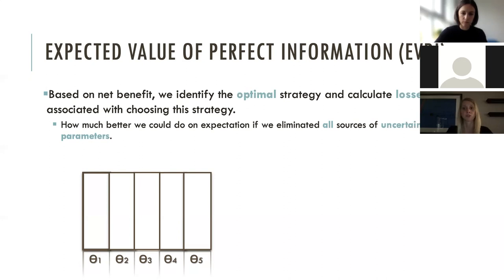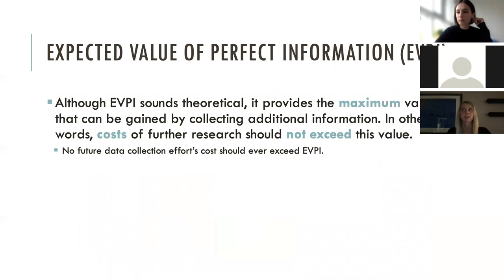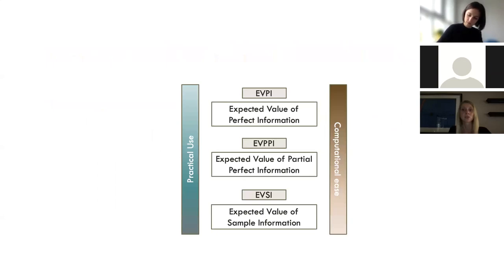At a willingness-to-pay threshold of $50,000 per additional life year gained, the EVPI would be $167,000 per patient. To estimate EVPI, we use net benefits to identify the optimal strategy, calculate losses associated with choosing that strategy, and ask how much better we could do on expectation if we eliminated all sources of uncertainty. Although EVPI is theoretical — perfect information is not feasible in practice — it provides the maximum value that can be gained by collecting additional information. No future data collection should ever cost more than the EVPI value.